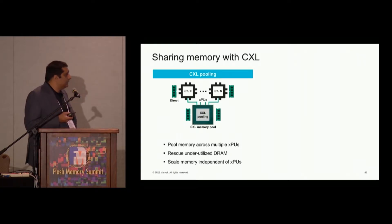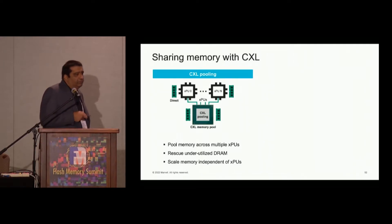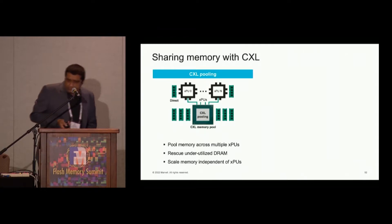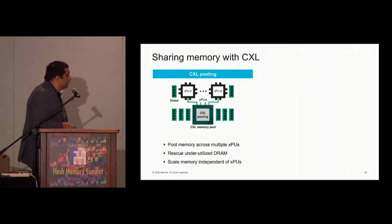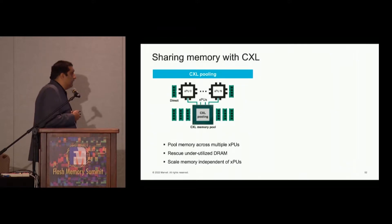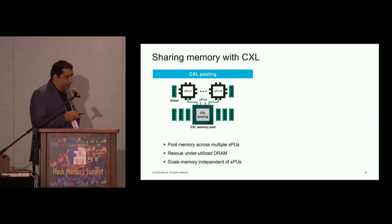The other problem is how do you scale memory independently of a given device — scaling to different memory technologies without the CPU having to control the DRAM controllers for that type of memory. Latency is very critical here. Instead of having a switch in the middle and putting memory on the other side — which adds a hop — you can have a combined CXL pooling device with memory directly connected, allowing one NUMA hop or lower latency to any of the other GPUs or CPUs.